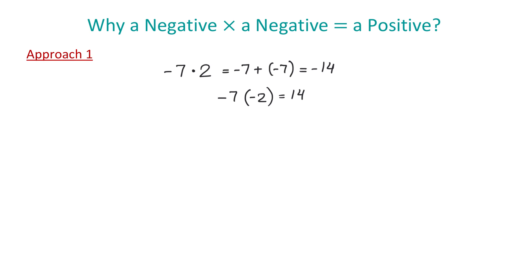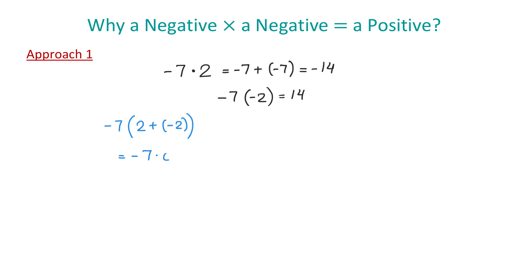In this example, we will multiply negative 7 by the sum of 2 and negative 2. To simplify this expression, we can use the order of operations and add the numbers inside the parentheses. Here, 2 plus negative 2 equals 0. Then, negative 7 times 0 equals 0.